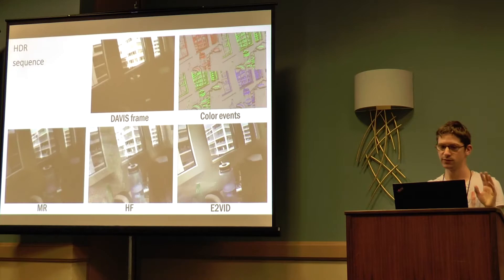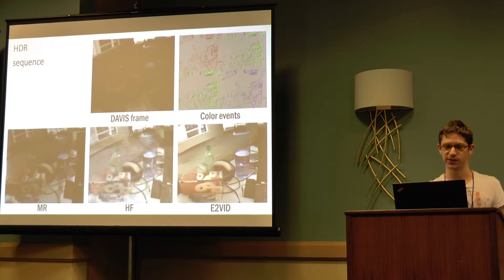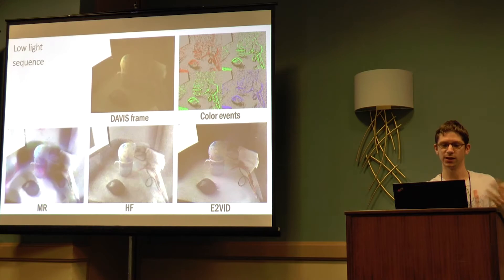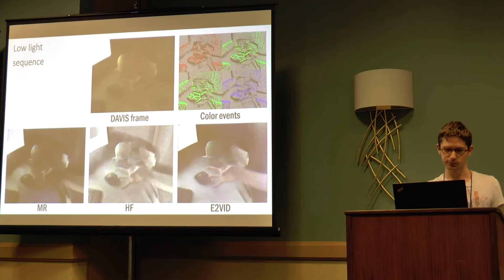This is an HDR example where you can see the Davis frame actually cannot capture the whole range of the scene, while the events and reconstructions can. This is finally a low light example where again we see the advantages of events compared to traditional sensors.